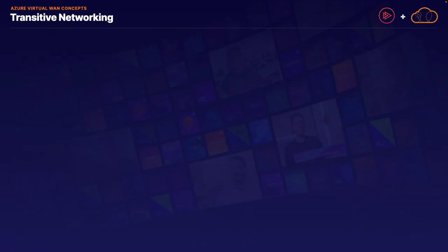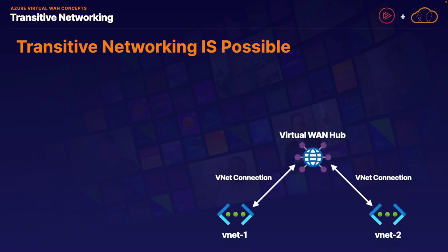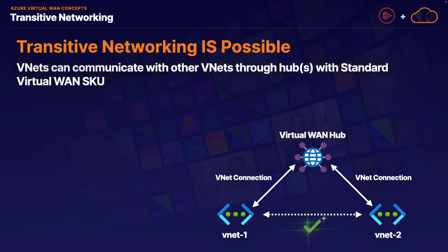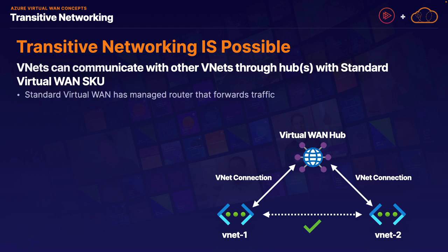Let's take a quick look at how Azure Virtual WAN handles transitive networking. Unlike our previous discussions on network pairing, with Azure Virtual WAN transitive networking is indeed possible. When working with Virtual WAN, virtual networks can communicate with each other through the hub if you are using the standard Virtual WAN SKU. The standard SKU has a managed router built into each individual hub that will automatically forward traffic from one spoke VNet to another. This is similar to deploying a network virtual appliance into an unmanaged hub network, except it's all automatic.